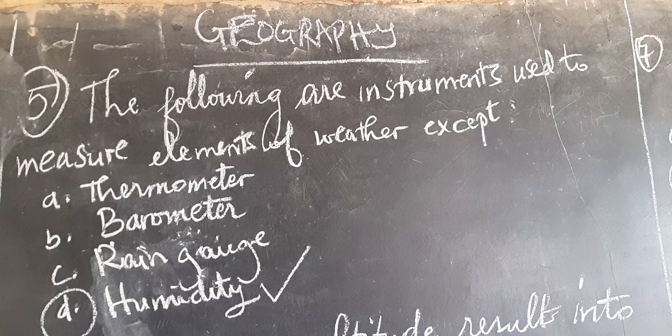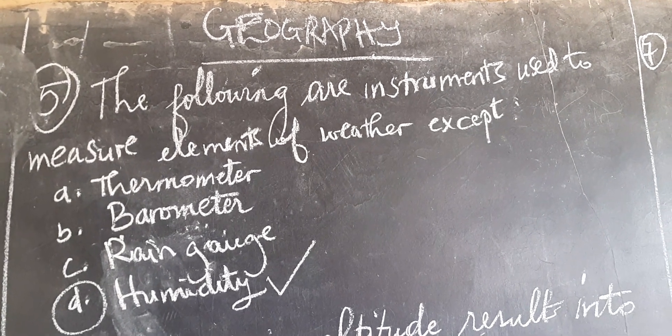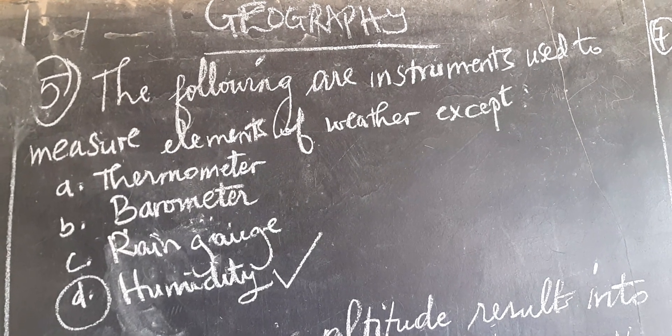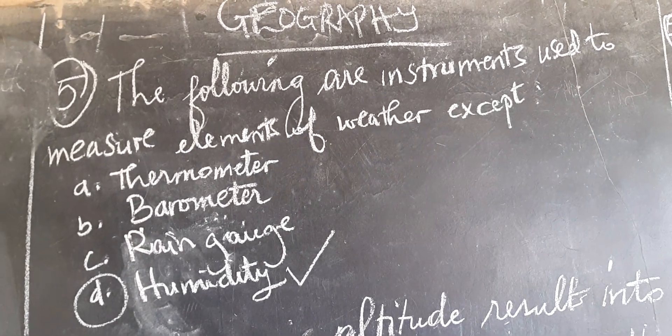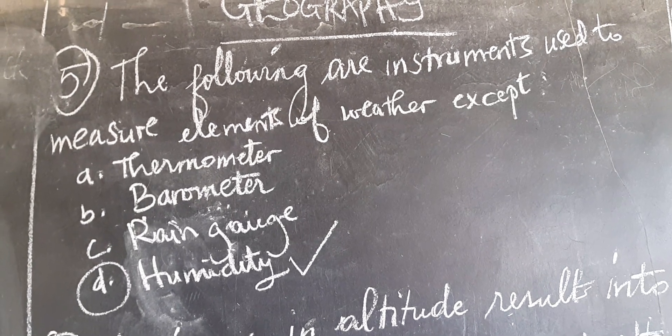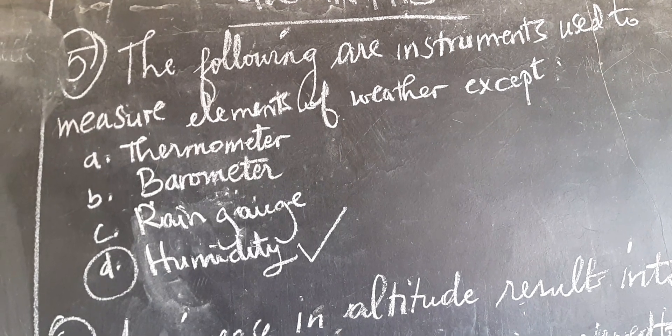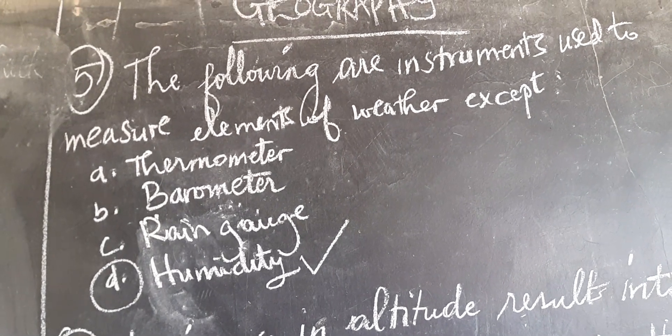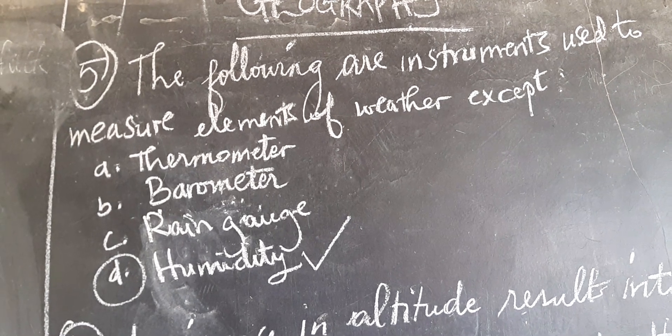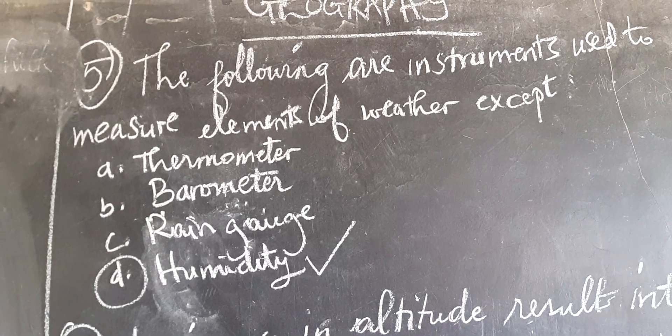The following are instruments used to measure the elements of weather except - so meaning that they give instruments that are used to measure the elements of weather, and you are going to choose the one which is not an instrument. A. Thermometer, B. Barometer, C. Rain gauge, D. Humidity. So the correct answer is D, which is humidity, because humidity is not an instrument, but an element of weather.